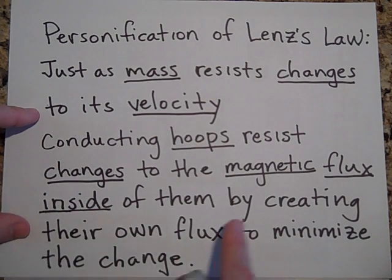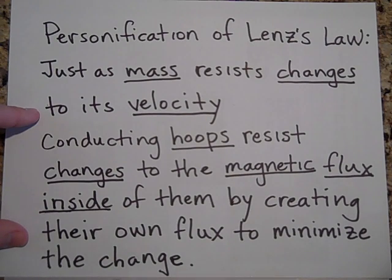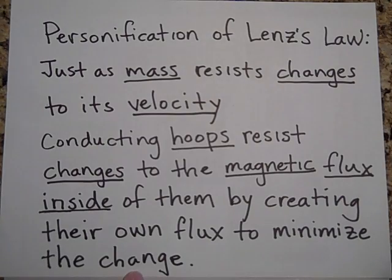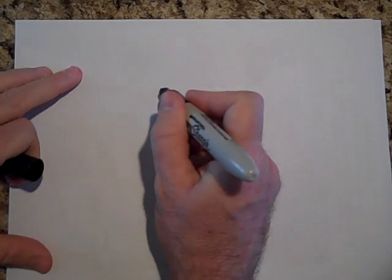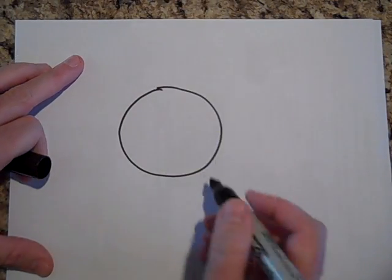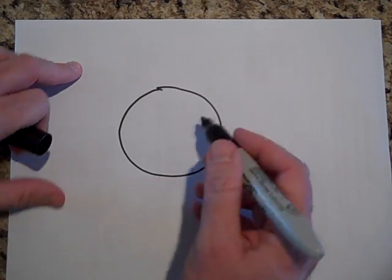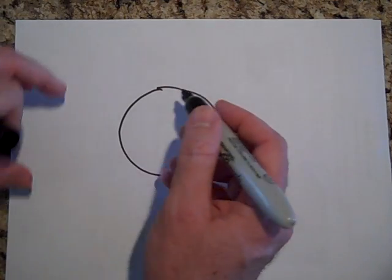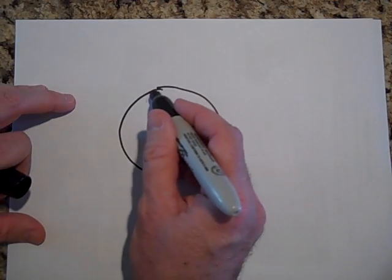If the magnetic flux does change, the hoop is going to create a current in itself that will minimize the change in flux. That kind of makes sense, because imagine if we had a wire — here's a circular loop of wire. This is the wire right here, and this is air inside.